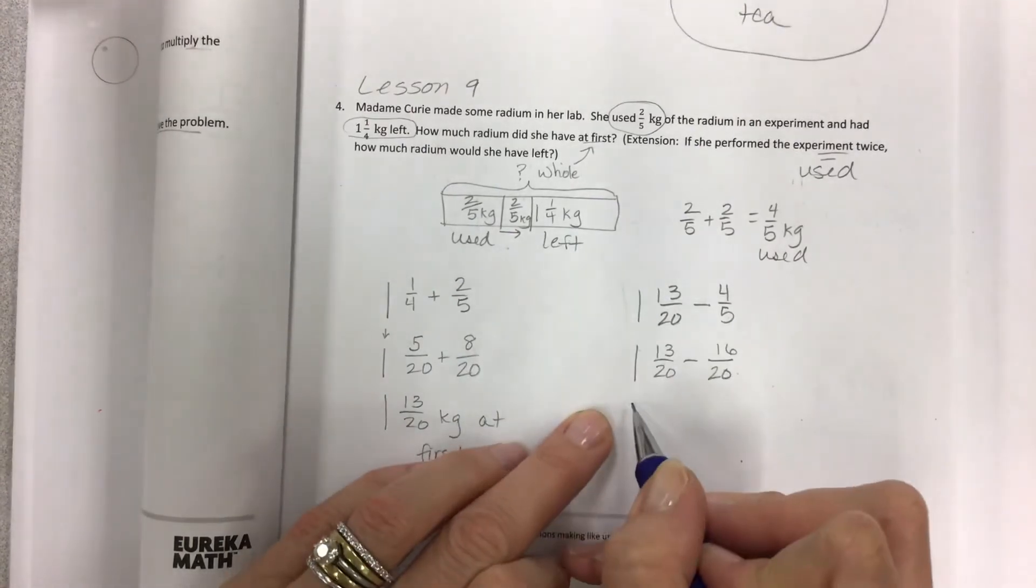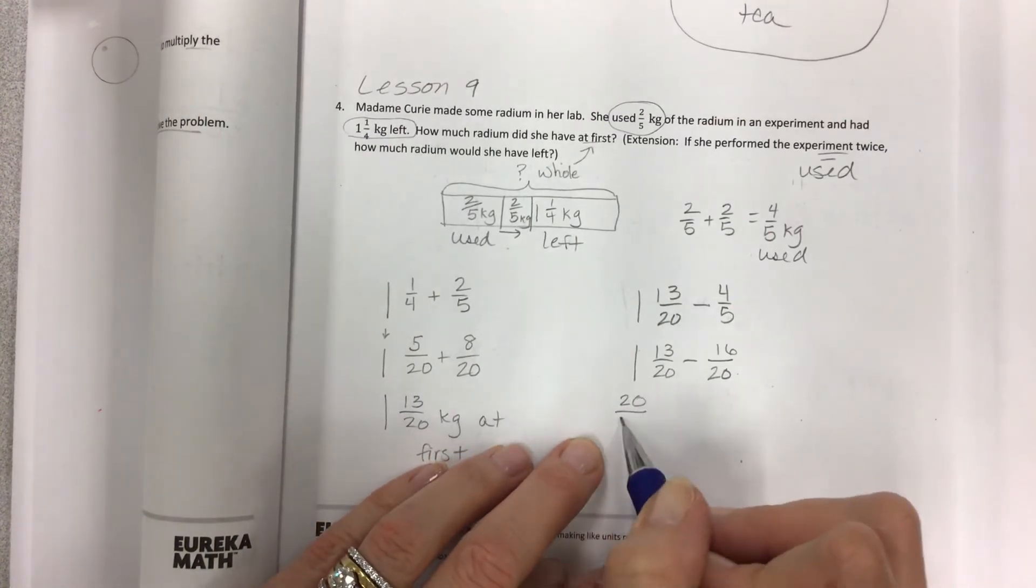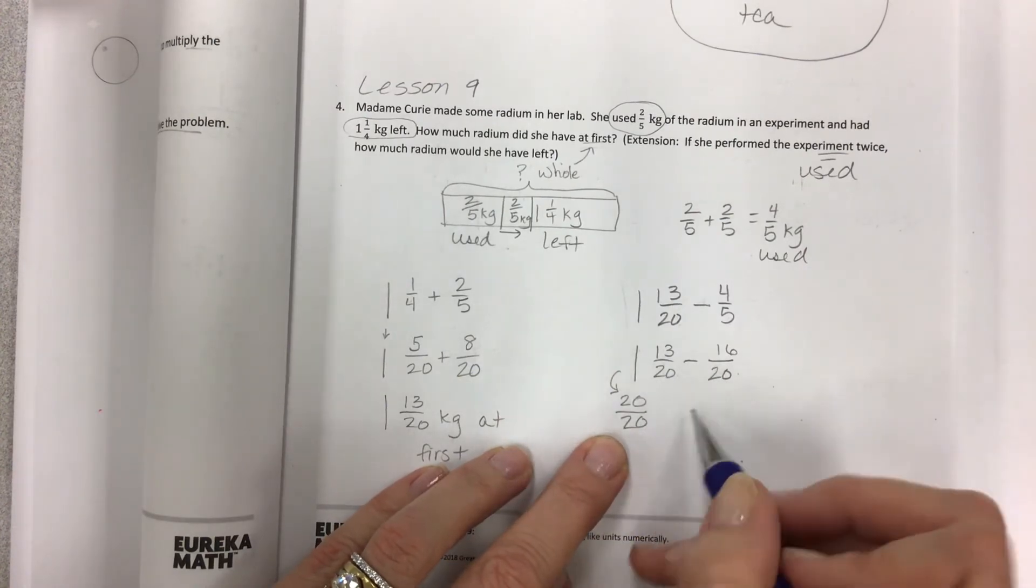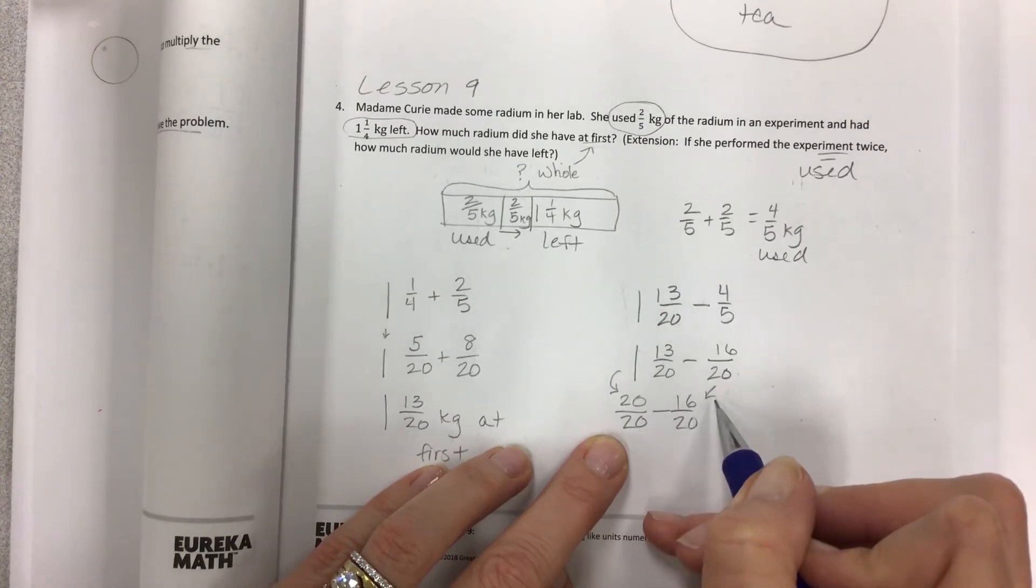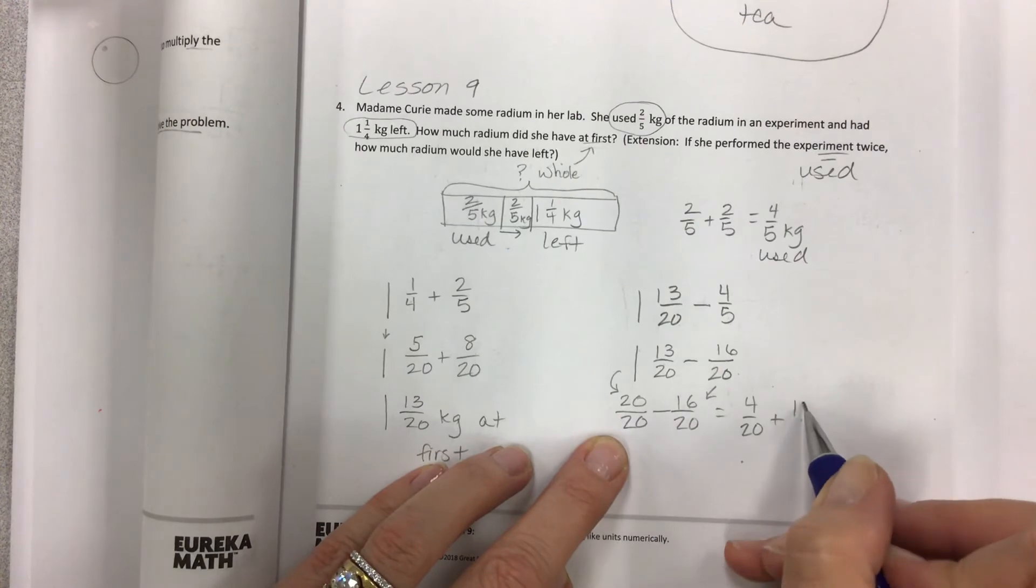Now the problem here is that I wouldn't take away sixteen from thirteen because I can't do that. So this is a perfect opportunity to take this one, call it twenty twentieths. Remember, like we can do this in subtraction, take away the sixteen twentieths that I need to take away, get four twentieths.